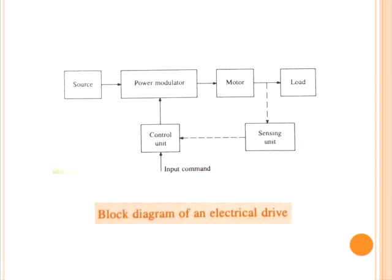A motor having speed-torque characteristics and capability compatible with the load requirement is chosen. The power modulator performs many functions in the block diagram after the source. It can modulate the flow of power from the source to the motor in such a manner that the motor is imparted the speed-torque characteristics required by the load. During transient operation such as starting, braking, and speed reversal, it restricts source and motor current within permissible values — excessive current drawn from source may overload or cause a voltage drop.